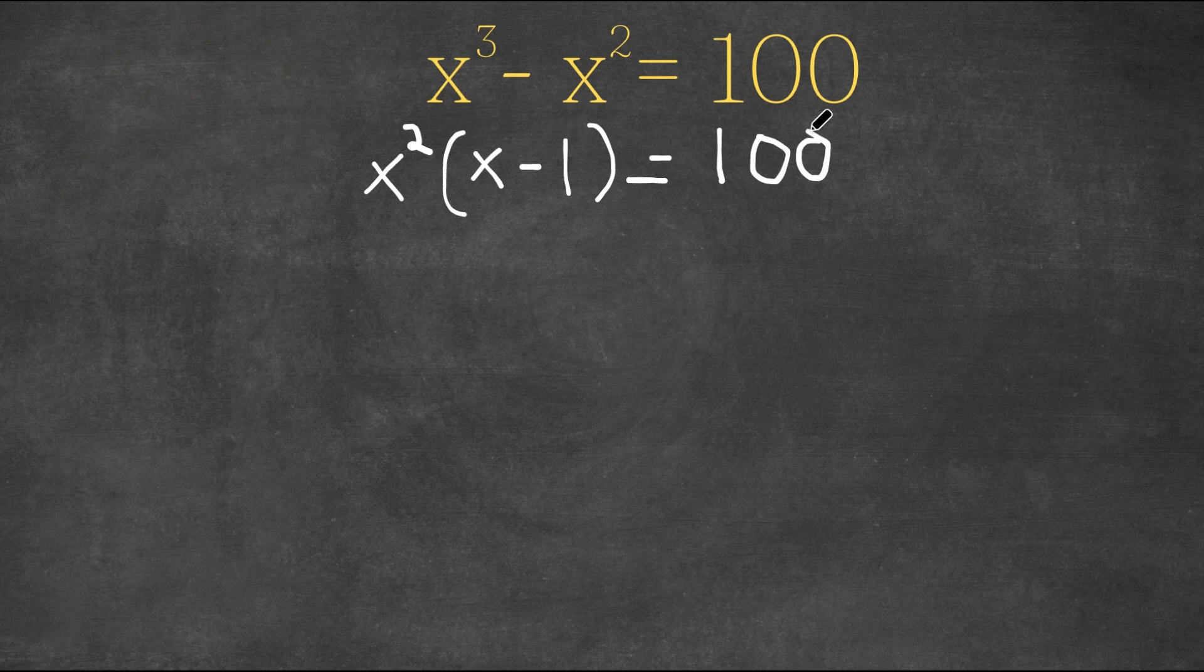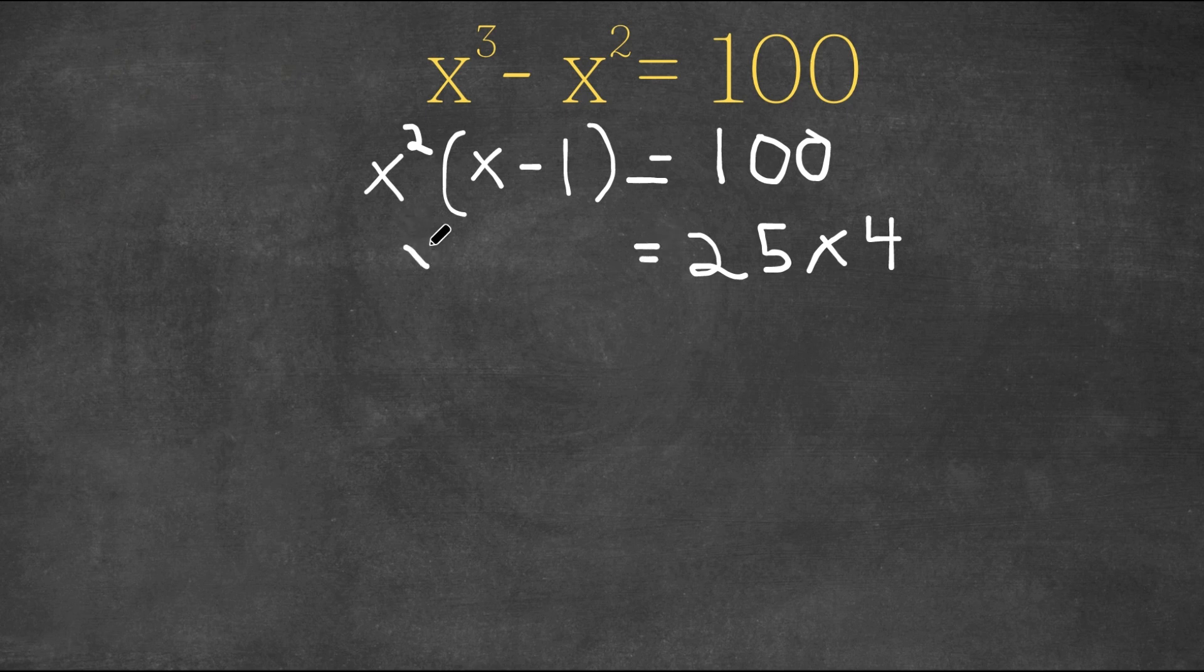So now what we're going to do is we're going to change 100 into 25 times 4. 100 is equal to 25 times 4, and this is still equal to x squared times x minus 1.